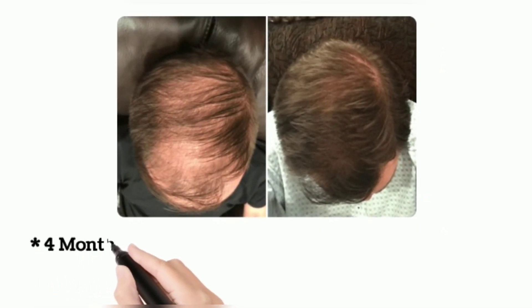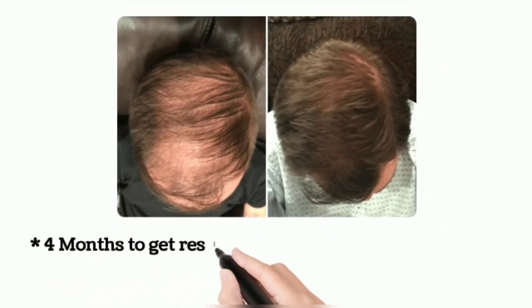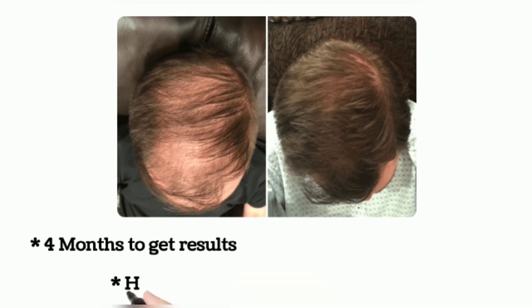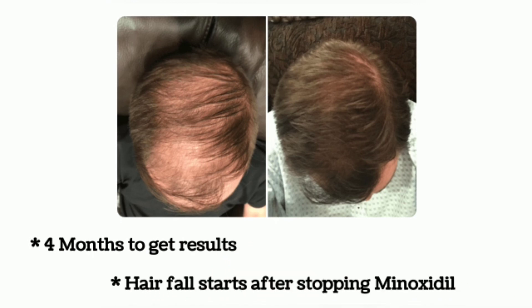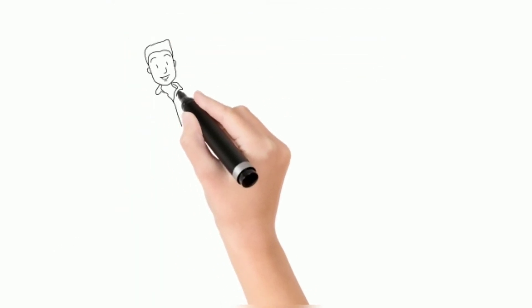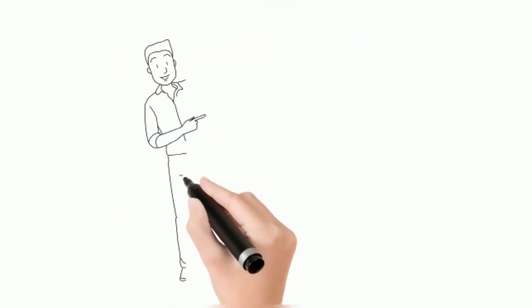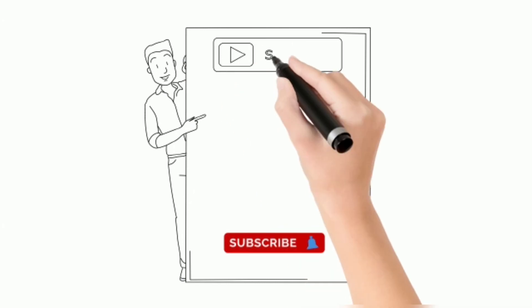It will take at least 4 months to see results after applying minoxidil. It is not a permanent treatment — hair fall will start within a few months after stopping minoxidil.